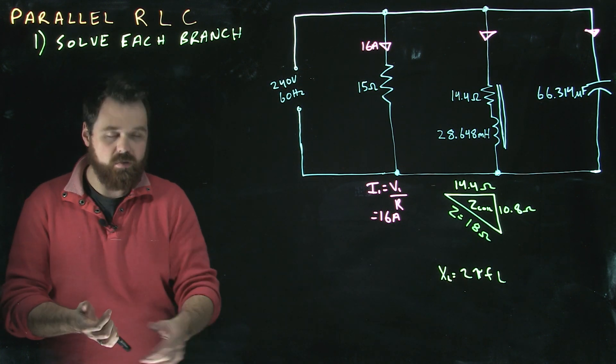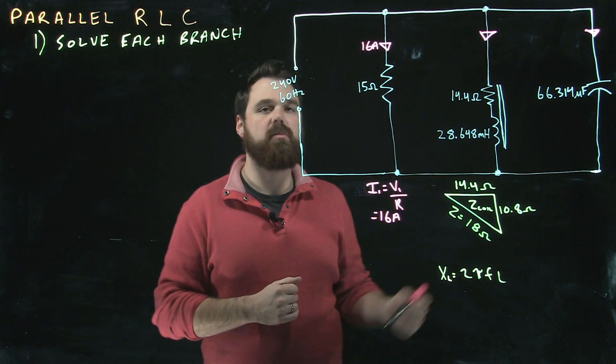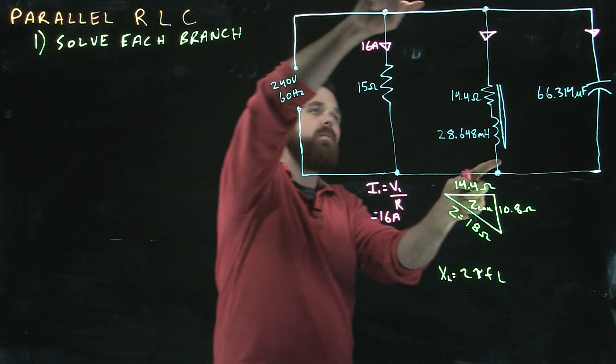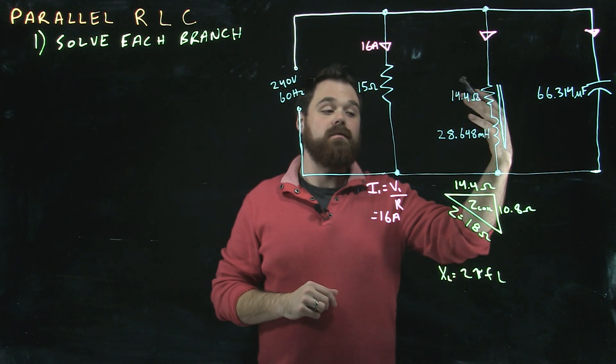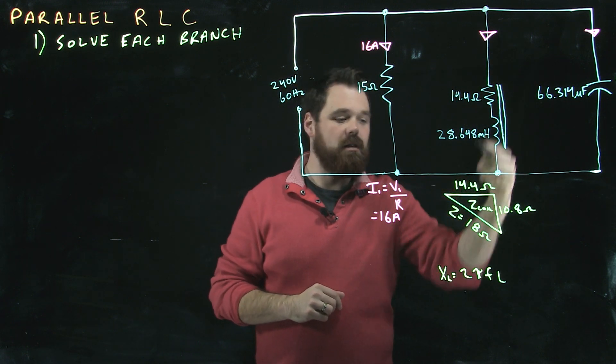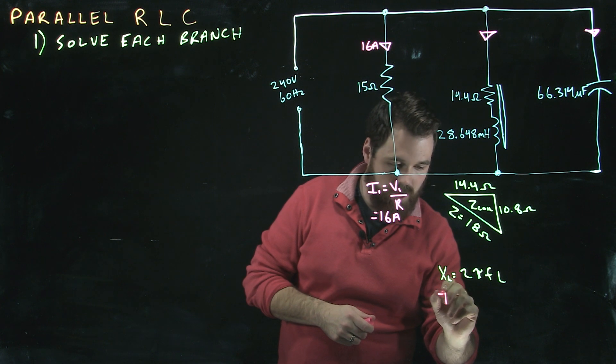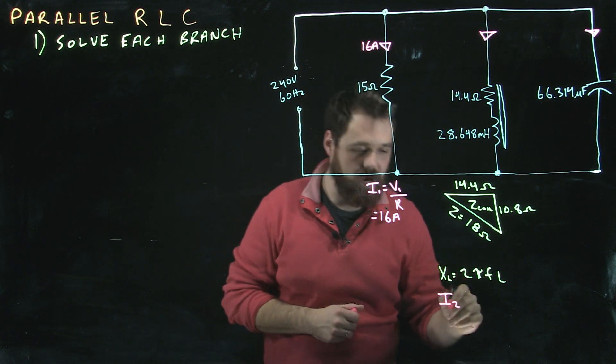Now, once we have the Z of the coil, we can figure out the current that is flowing through this branch. We can use 240 volts, which is the voltage across the coil, divided by the impedance of the coil. So we'll go I2, we'll call it in this case, flowing through the second branch.